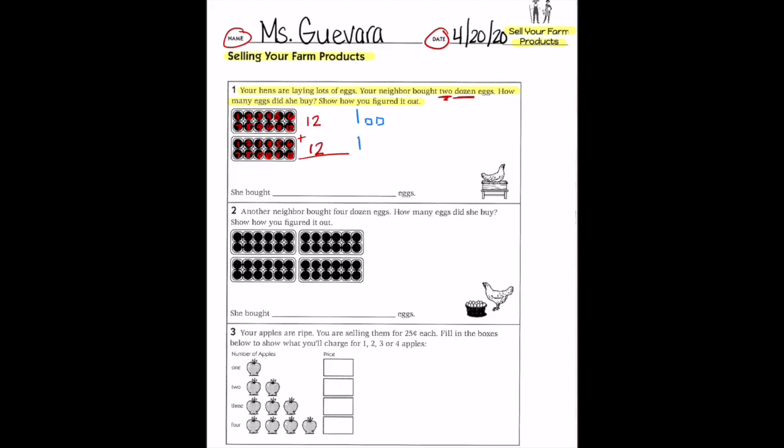I'm going to use the base ten blocks to show you how I got my answer. 12 is one ten and two ones. So I drew one ten and two ones two times. Now I'm going to count my ones first. I have four ones. Now I'm going to count my tens. I have two tens. So together I have 24.